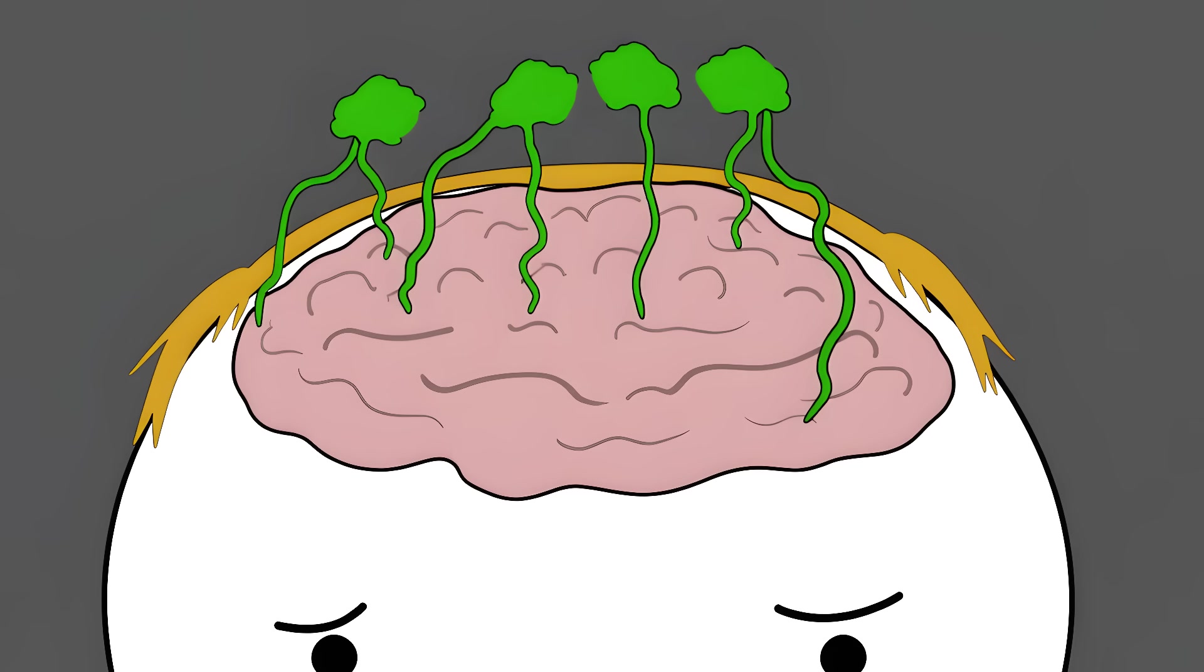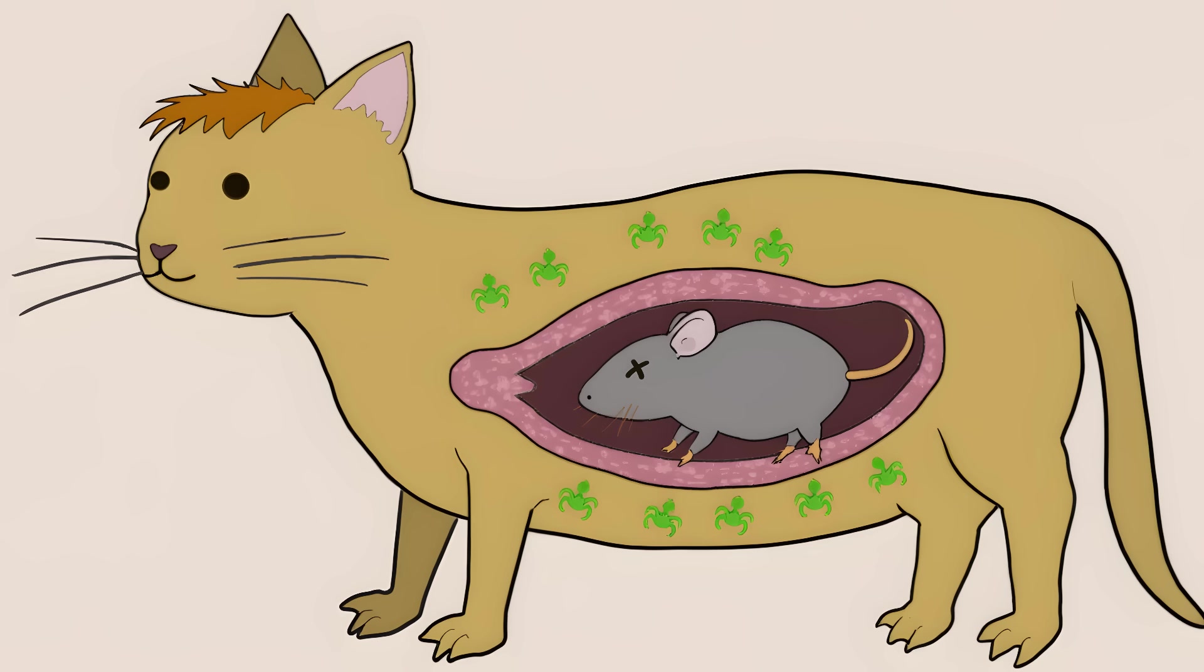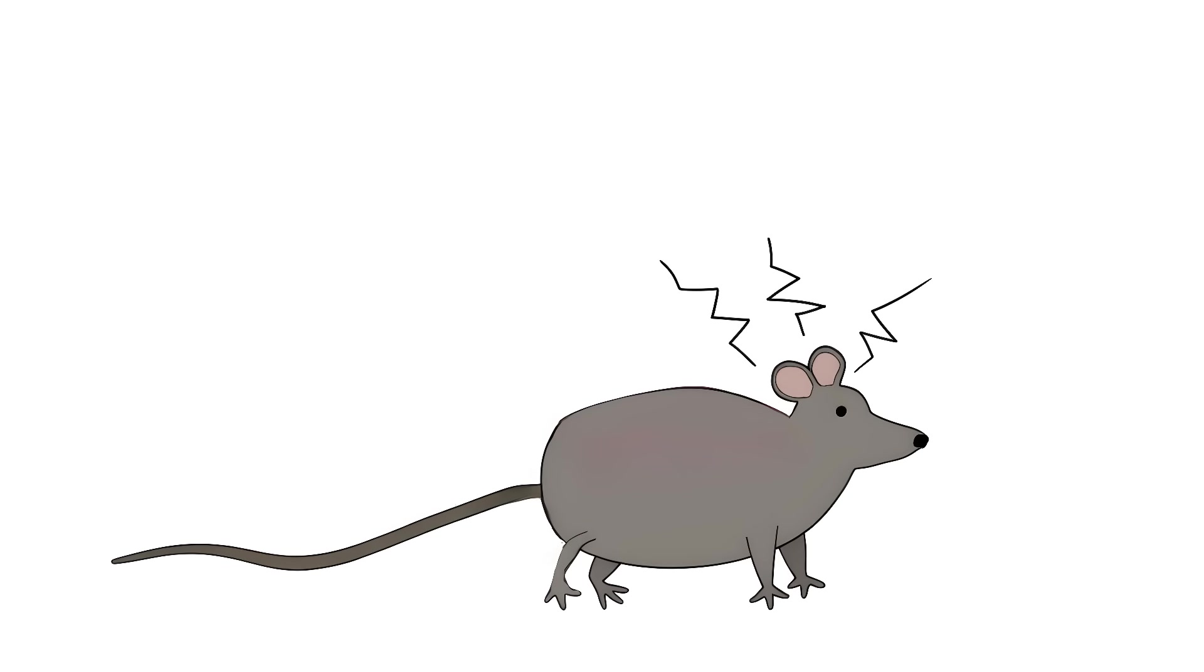Number 6. The Mind Control Parasite. There's a tiny parasite called Toxoplasma gondii that turns mice into mindless zombies. This microscopic monster has one goal, to get inside a cat's stomach. But mice naturally run away from cats, so this parasite rewires the mouse's brain.